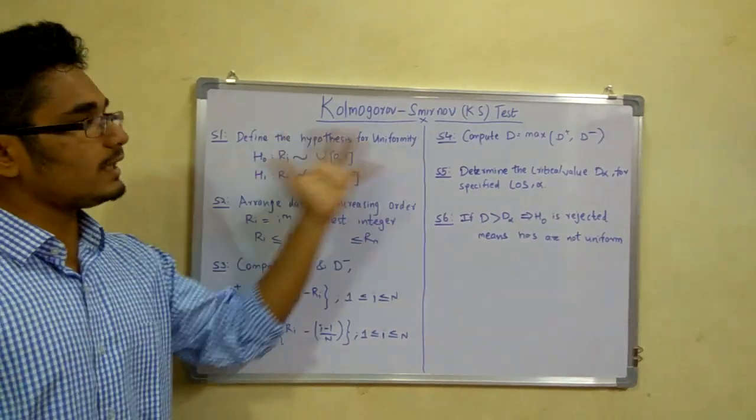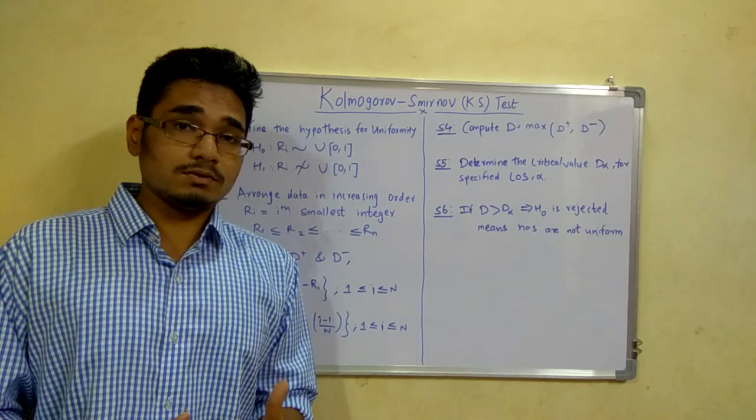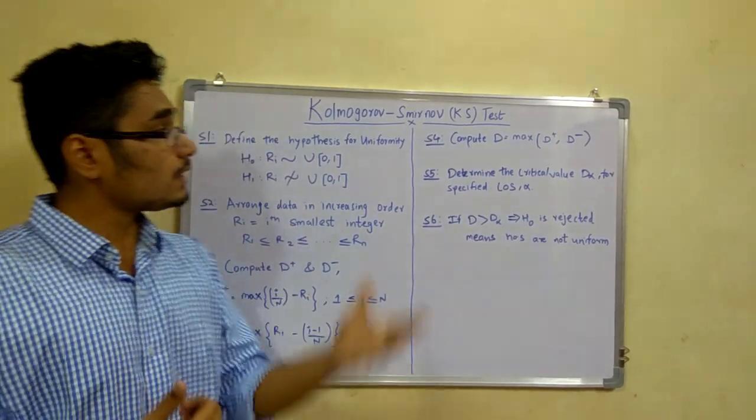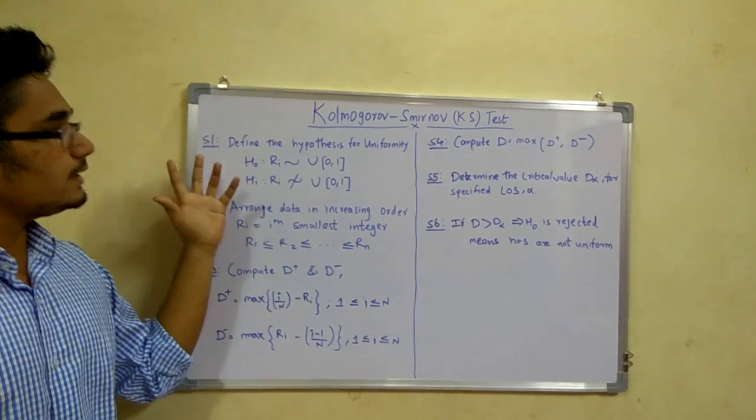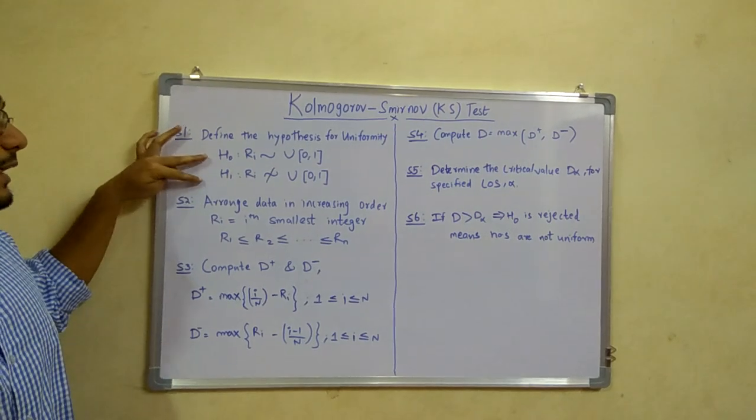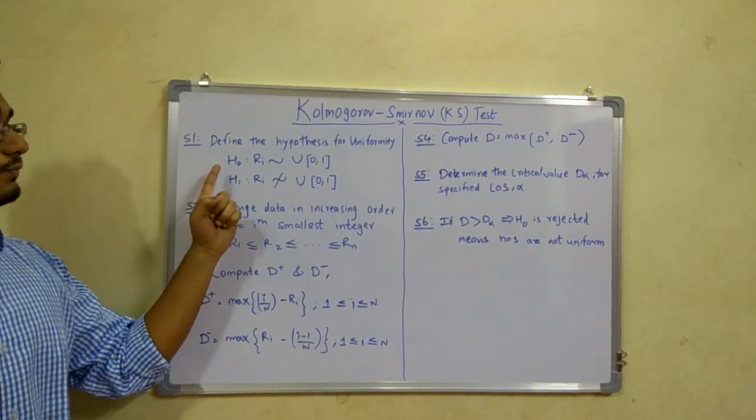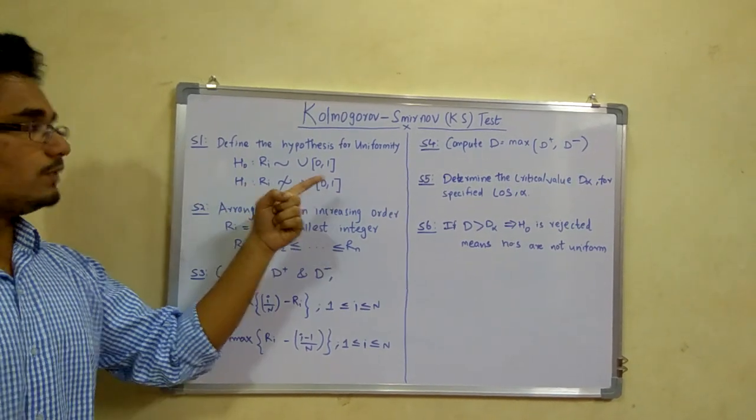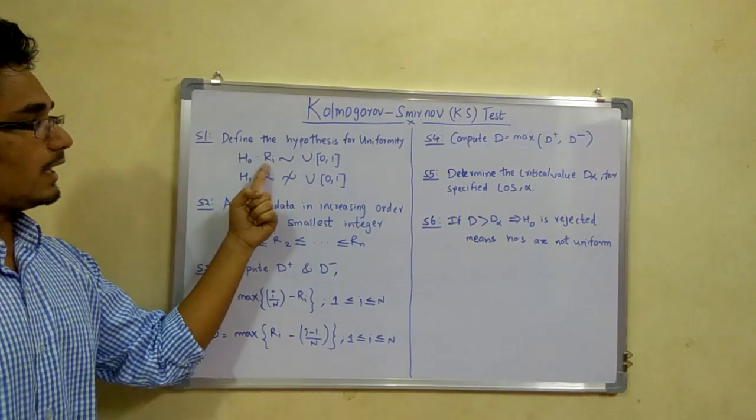First, this KS test is used to test the hypothesis of the numbers, to determine whether the numbers are uniform or not. For that, we first define the hypothesis for testing uniformity. There are two cases: H0 and H1. H0 is the hypothesis that the numbers are uniform.